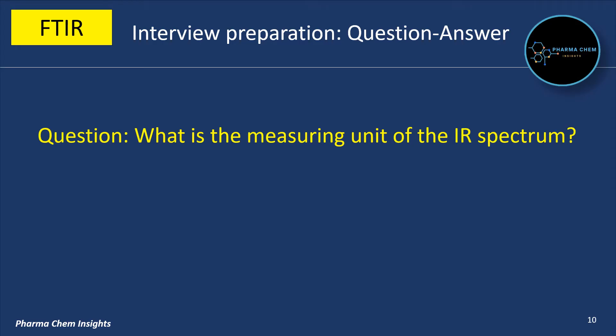What is the measuring unit of the IR spectrum? The measuring unit of the IR spectrum is per cm, also expressed as cm⁻¹.